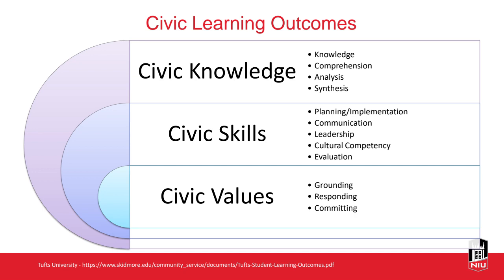These are some civic learning outcomes. The main ones are civic knowledge, civic skills, and civic values. Under civic knowledge we have knowledge, comprehension, analysis, and synthesis. Under skills: planning and implementation, communication, leadership, cultural competency, and evaluation. Under values: grounding, responding, and committing. I'm going to share a document from Tufts University and go over some sample outcomes for each domain.